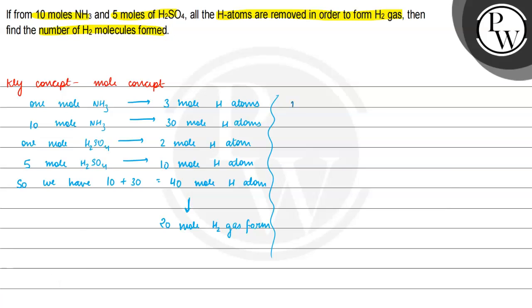Molecules of H2 equals moles multiplied by Avogadro number. So the moles are 20 and Avogadro number is 6.023 into 10 raise to the power 23. So the number of H2 molecules comes out to be 12.046 into 10 raise to the power 24.